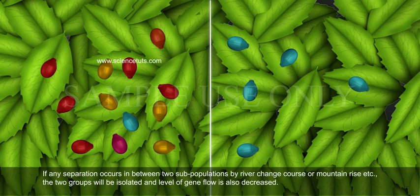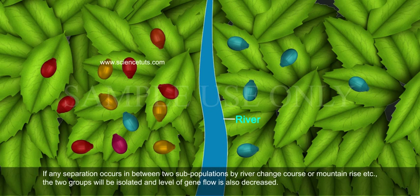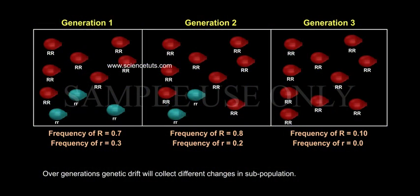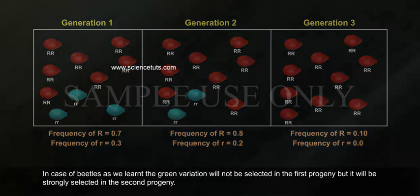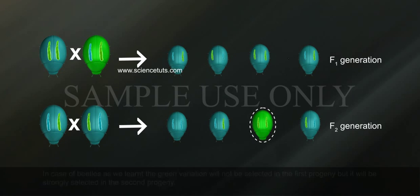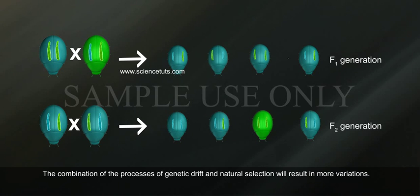If any separation occurs between two subpopulations — by a river changing course, or a mountain range, etc. — the two groups will be isolated and the level of gene flow will also decrease. Over generations, genetic drift will collect different changes in each subpopulation. In the case of beetles, the green variation will not be selected in the first progeny but will be strongly selected in the second progeny. The combination of genetic drift and natural selection will result in more variations.